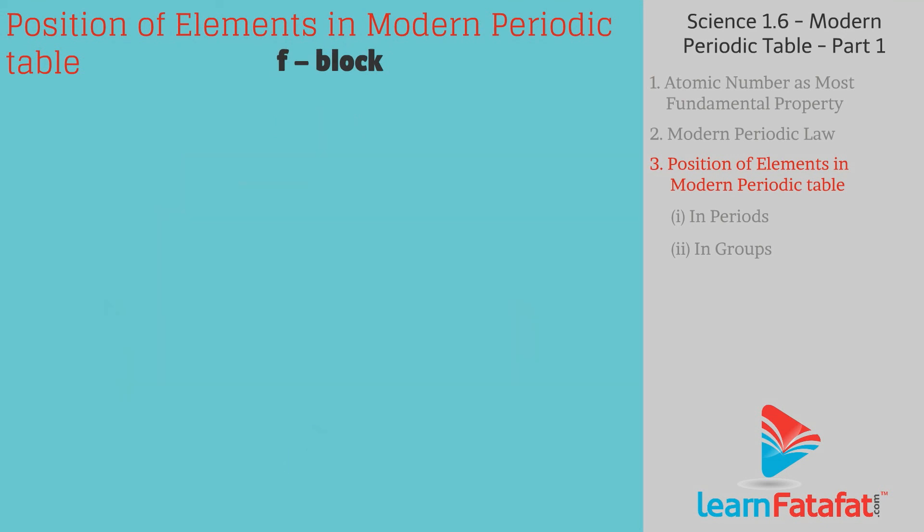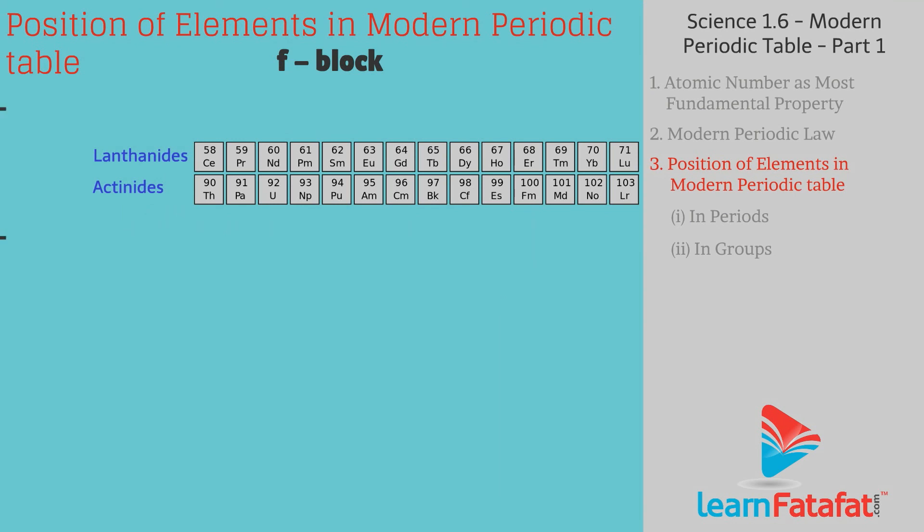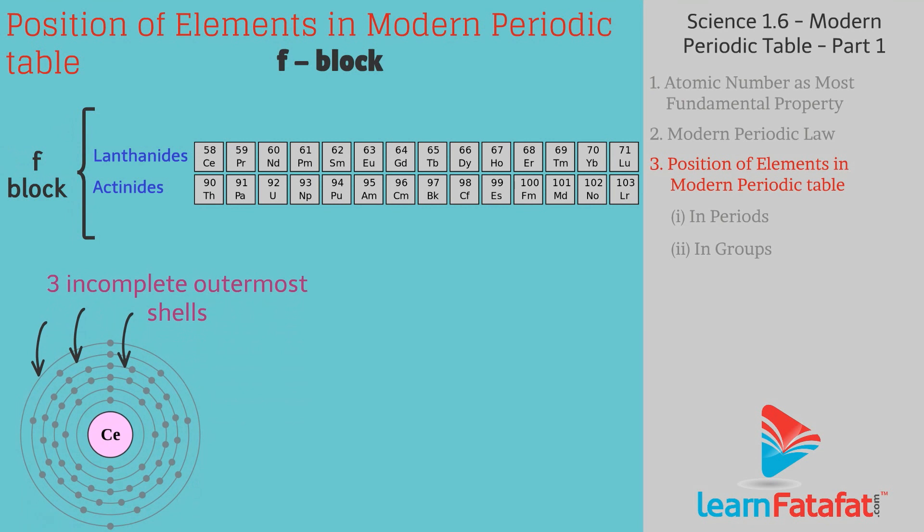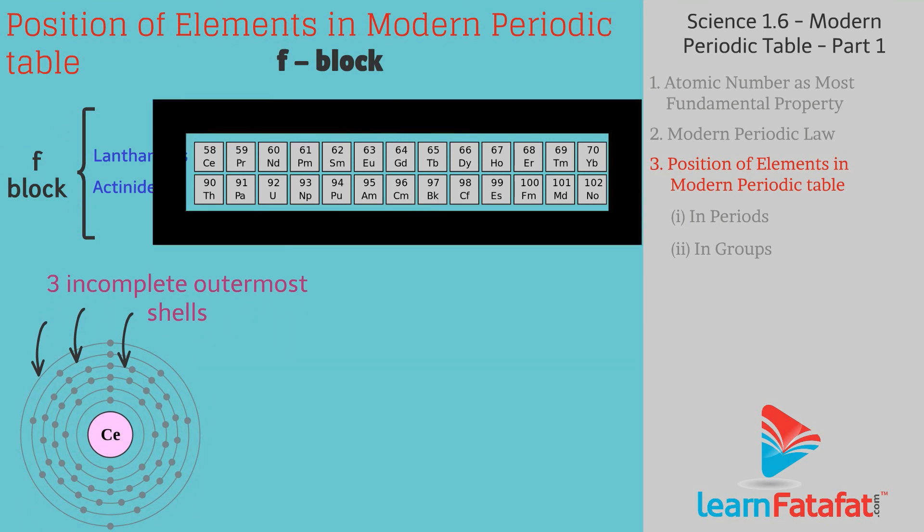F block elements: Lanthanides and actinides are called as F block elements. These elements have 3 incomplete outermost shells. All these elements are metals.